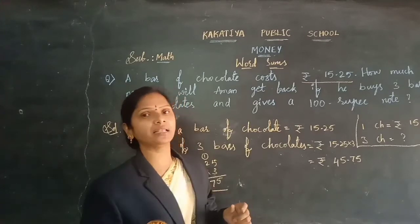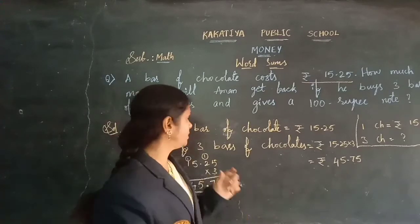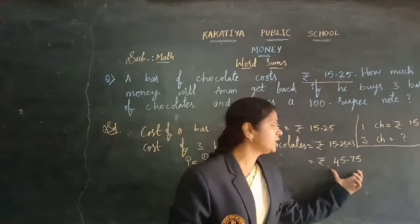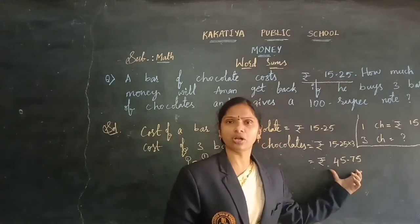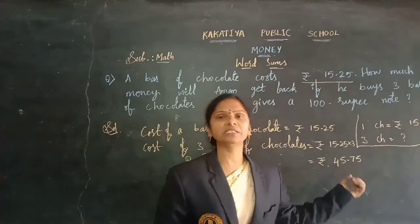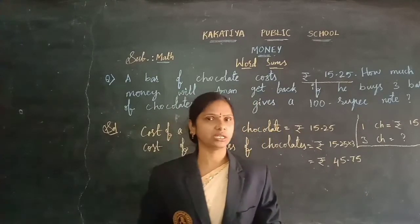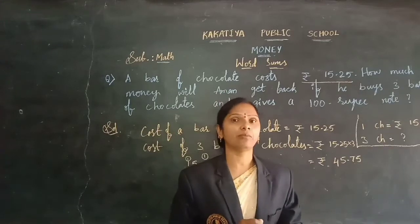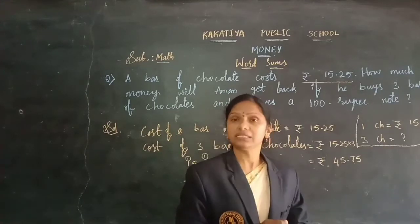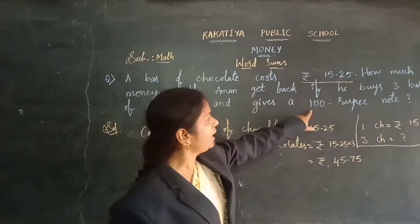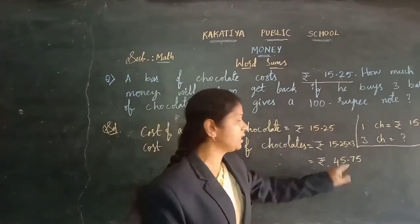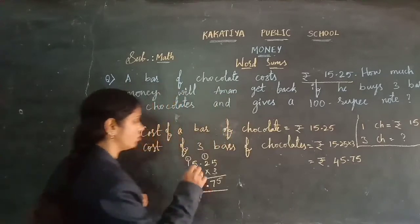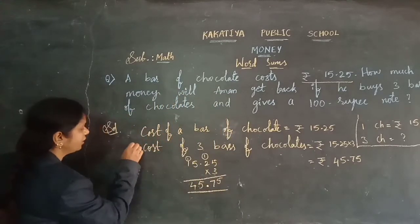He will get back the amount after purchasing the 3 chocolates. This amount — 45 rupees 75 paise — is for 3 chocolates. We need to find out the get-back amount by subtraction. From 100 you need to subtract the things cost. Come on, let's find it here.